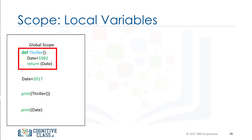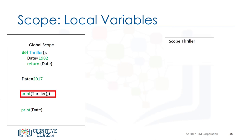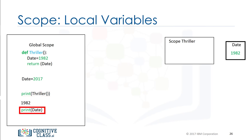Consider the function thriller where the local variable date is set to 1982, while the global variable date is set to 2017. When we call the function, we create a new scope, and within that scope the value of date is set to 1982. If we call the function, it returns the value of date in the local scope — in this case, 1982. When we print in the global scope, we use the global variable value. The global value of the variable is 2017, so the value is 2017.